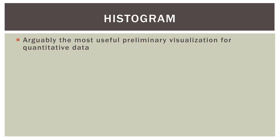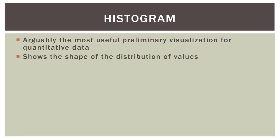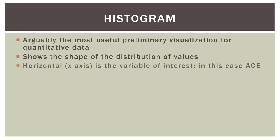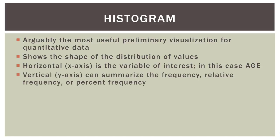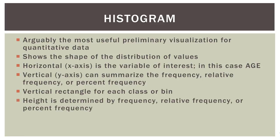So what is a histogram? In my opinion, it is arguably the most useful preliminary visualization for quantitative data, and it's very straightforward and simple. It shows the shape of the distribution of values — are most of our values in the middle of the histogram, or on one end? The horizontal or x-axis is the variable of interest, in this case age. The vertical or y-axis can summarize the frequency, relative frequency, or percent frequency of the number of observations in a certain bin. We create a vertical rectangle for each bin, and the height of that rectangle is determined by the frequency, relative frequency, or percent frequency of the observations in that bin.